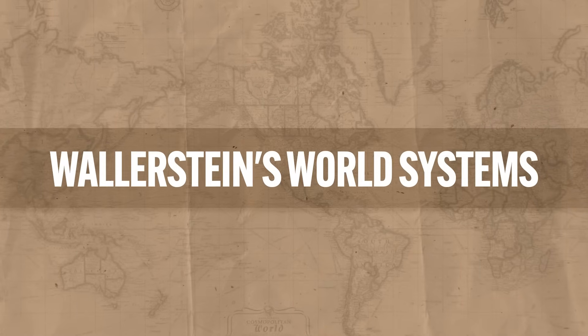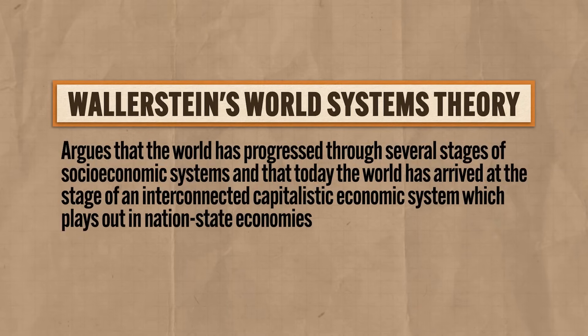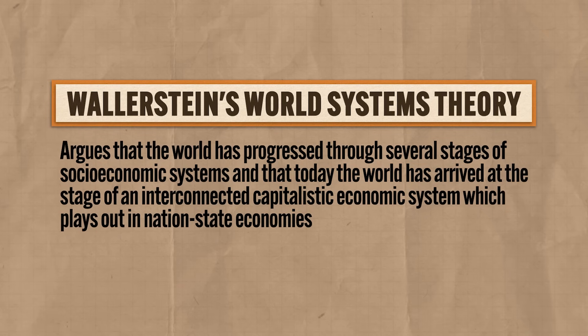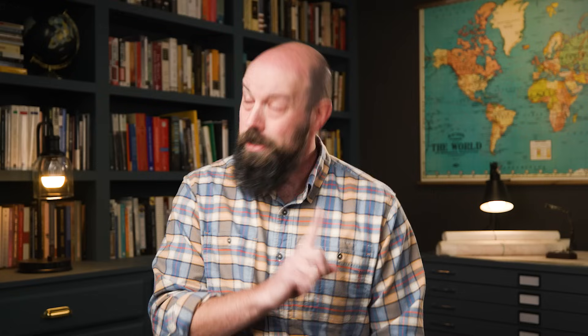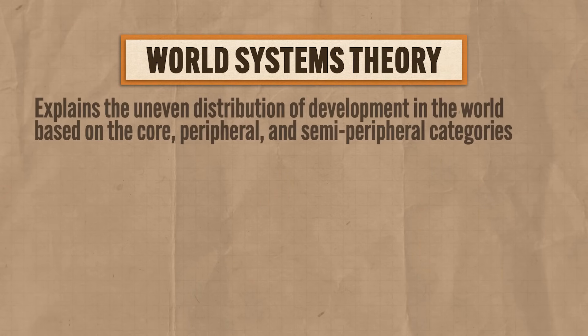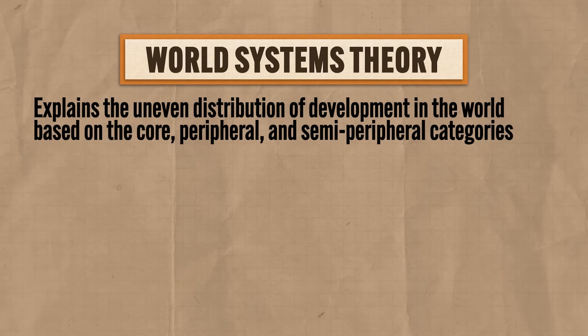The third theory is known as Wallerstein's World Systems Theory, and it argues that the world has progressed through several stages of socioeconomic systems, and that today the world has arrived at the stage of an interconnected, capitalistic economic system which plays out in nation-state economies. Like Dependency Theory, Wallerstein assumes a global interconnectedness between countries, which is the way the world actually works. This theory explains the uneven distribution of development based on core, peripheral, and semi-peripheral categories.